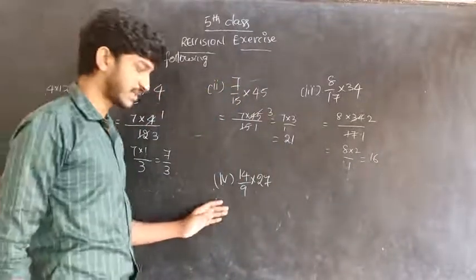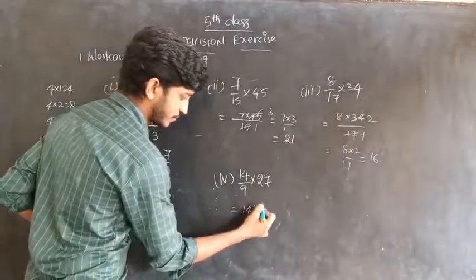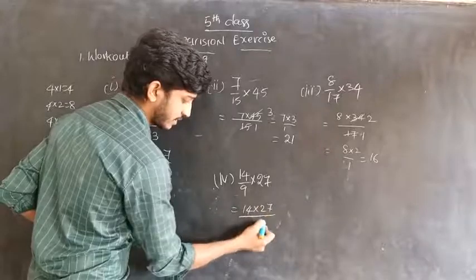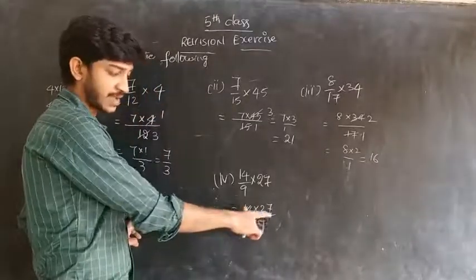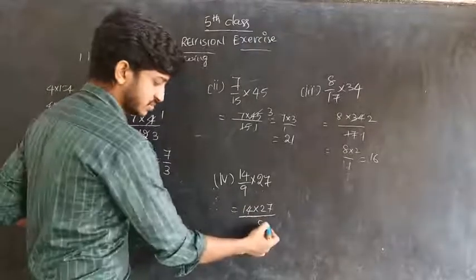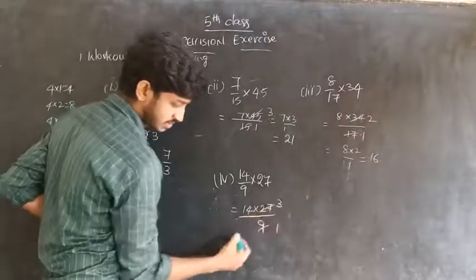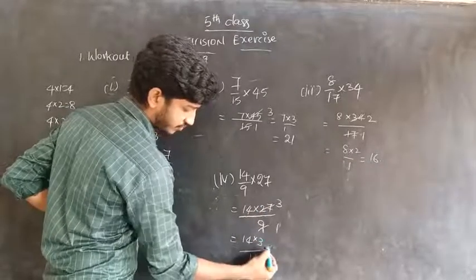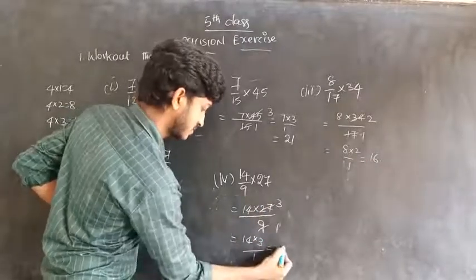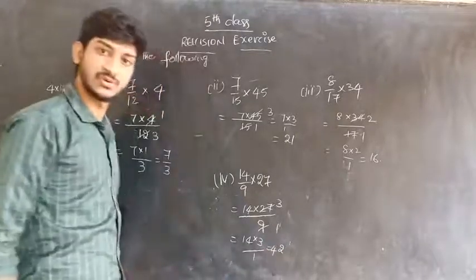Next: 14 by 9 into 27. So 14 into 27 by 9. In the 9 table, 9 one time and 27 three times. 9 table: 9 once is 9, 27 three times. So 14 into 3 by 1 equals 14 times 3 is 42.